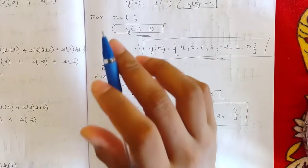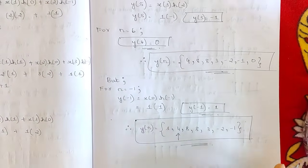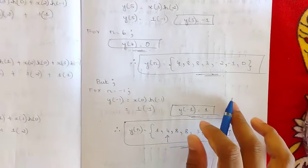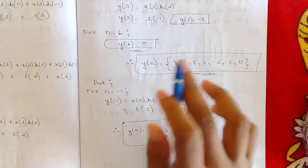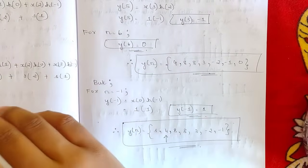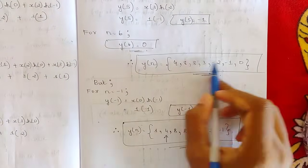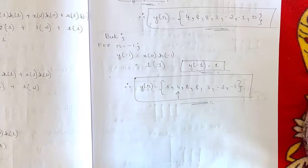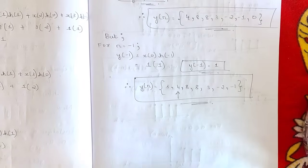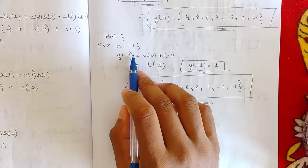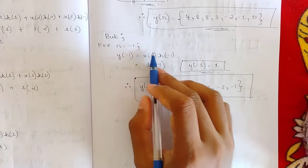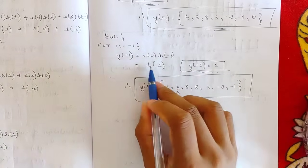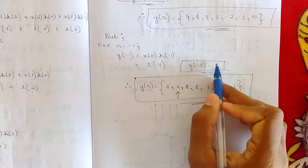Since H[n] has the arrow mark at n=0 (value 2), we should also find Y[-1]. For n=-1: Y[-1] = X[0]·H[-1-0] = X[0]·H[-1]. Substituting gives Y[-1] = 1. So the term at n=-1 must be included in the final output.